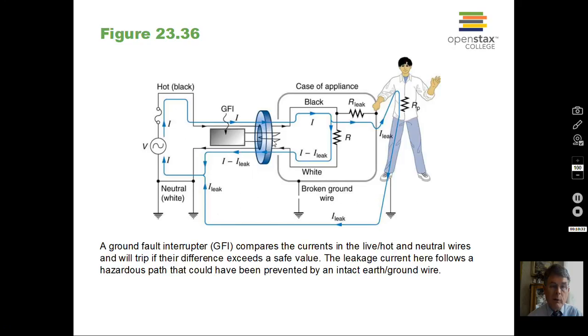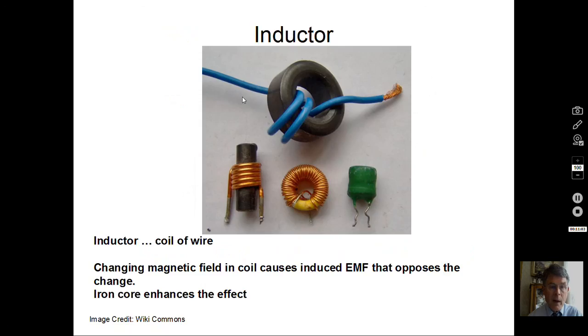You've also probably seen ground fault interrupt plugs, outlets, where there's a sensor in that ground fault interrupt where it can detect the size of the current going to the device and coming back from the device. And if it detects that there's been a change, some current leaking through a human body perhaps or something else, it'll trip a little circuit breaker here at the outlet. So very popular near water sinks and so forth if you have an electrical outlet.